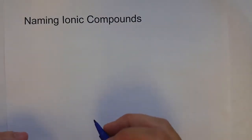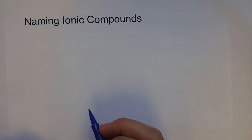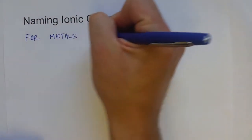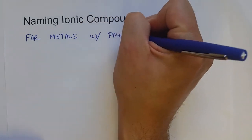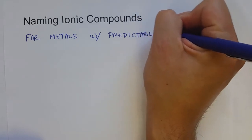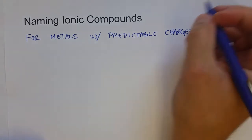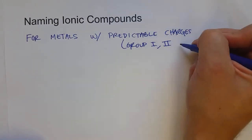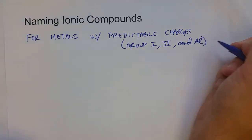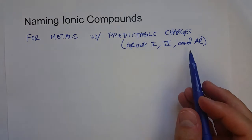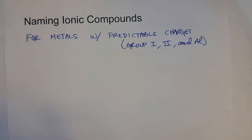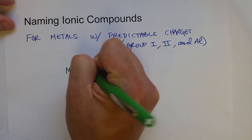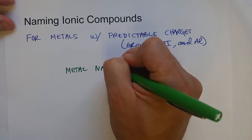In the last video we were naming ionic compounds without really knowing it. Here we'll talk about it a bit more. For metals with predictable charges — group one, group two, and aluminum — it's a pretty straightforward naming process. It's just the metal's name plus the anion name.